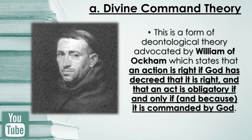One deontological theory is the divine command theory. William of Occam's divine command theory states that an action is right if God has decreed that it is right, and that an act is obligatory if and only if, and because, it is commanded by God. For William of Occam, the will is not a blind faculty — it operates through the mediation of right reason, though it need not follow its dictates. The will is free; in order to act properly, therefore, an agent must try to be the sort of person who wills what God wants him to will, precisely because he knows God wills him to will it.